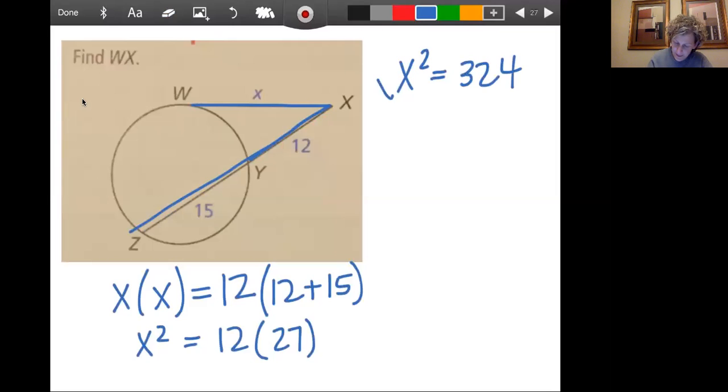All right, how do we get x by itself? Square root and x will equal 18. Square root of 324 is 18. Okay, nice job.